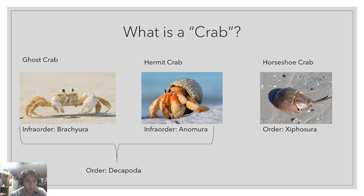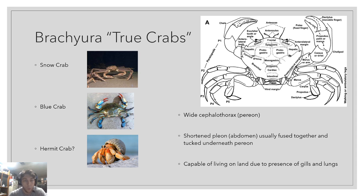What's important to us in this presentation is the difference between the infraorders Brachyura and Anomura. When I'm talking about what a crab is throughout this presentation, I'm referring to characteristics of the infraorder Brachyura. Brachyura are referred to as the true crabs. This includes species like snow crab and blue crab, and they have specific but general characteristics just because of how various crustaceans are.